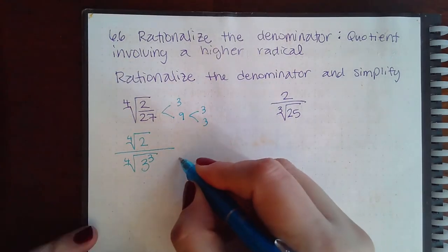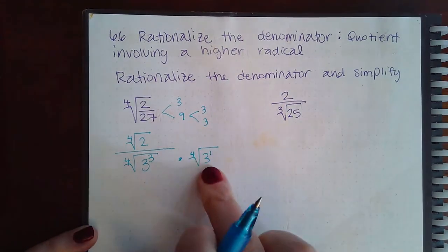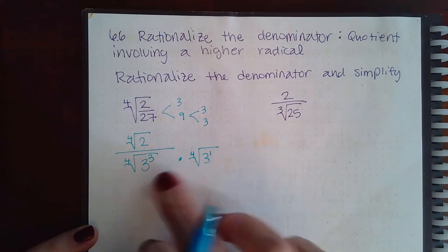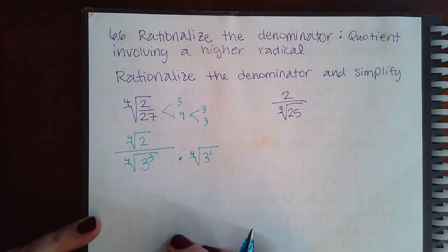I would need four total which means I need an extra one. So I need this guy so that I will have 3 to the fourth power and then I can take the fourth root of 3 to the fourth power. But whatever I do to the bottom I have to do the same to the top.